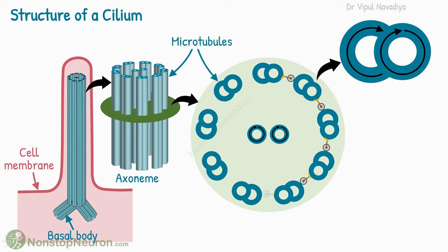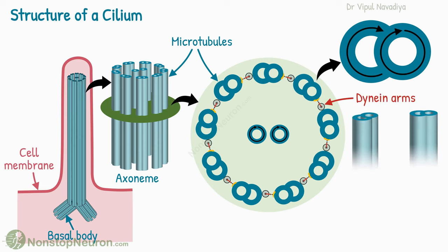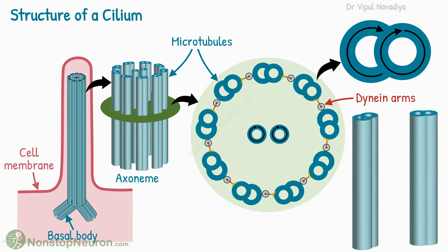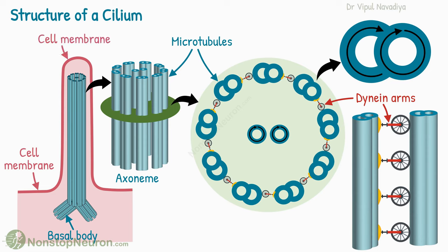Each outer pair is connected to its neighbor by dynein arms. In a side view, we can see that multiple dynein arms connect adjacent pairs. This is the axoneme, and this entire axoneme is covered by the cell membrane.